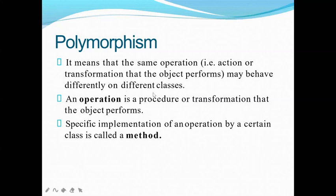You can have different classes with the same operation, the same class with different operations, or individually any of these combinations. Whenever any of these things has many formations, that is polymorphism. The specific implementation of an operation by a certain class is called a method.